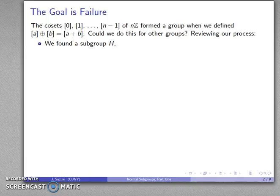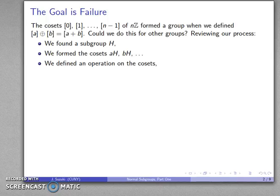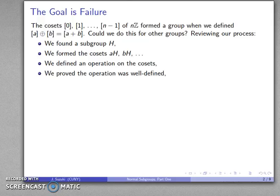And so if we look at our process, what we did is we started out by finding a subgroup H, we formed the cosets, we defined a binary operation on the cosets, we proved that this binary operation was well-defined, and then we verified that our group properties actually held.